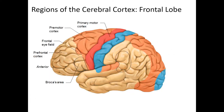The frontal lobe is associated with judgment, personality, and word formation. The primary motor cortex occurs at the junction of the frontal and parietal lobes. The premotor cortex, located more anteriorly and functioning as an association area, determines which muscles need to be utilized and then sends that information to the primary motor cortex to disseminate the message to the correct locations.